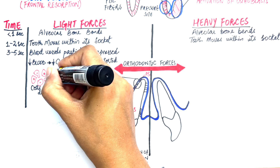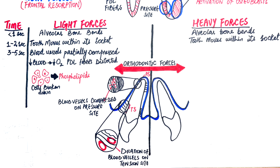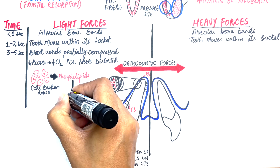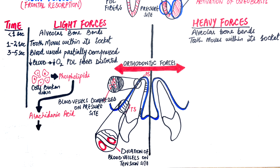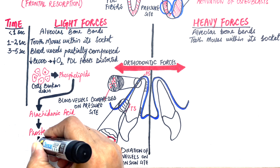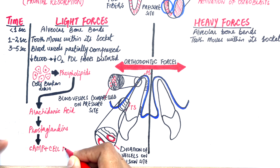As a result, phospholipids, which are an integral part of cell membranes, are released from the broken-down tissues. The phospholipids are further broken down into arachidonic acids. The arachidonic acids will release prostaglandins as an end product. The prostaglandins then act as a second messenger and will help increase cellular activation and differentiation necessary for the remodeling of the bone in the PDL.